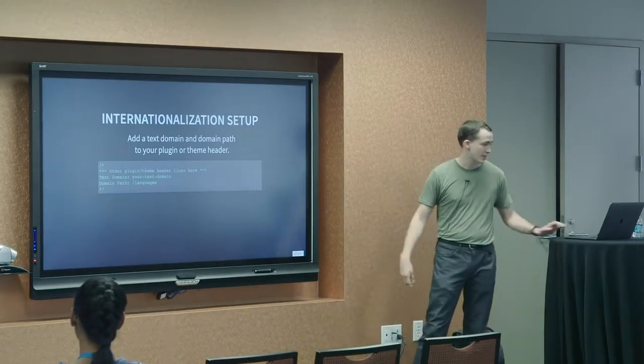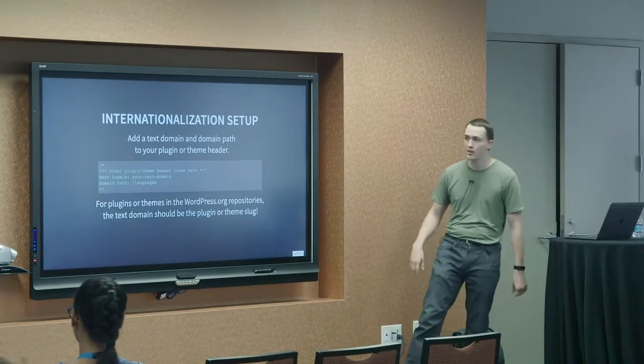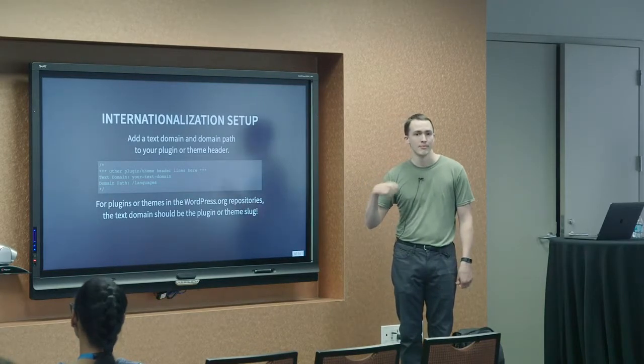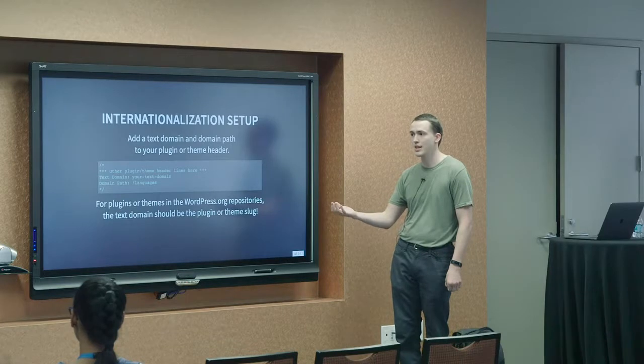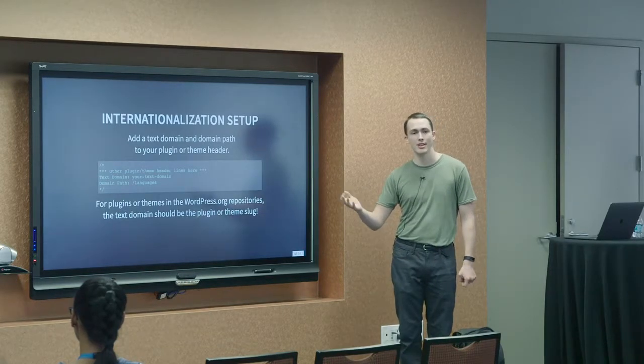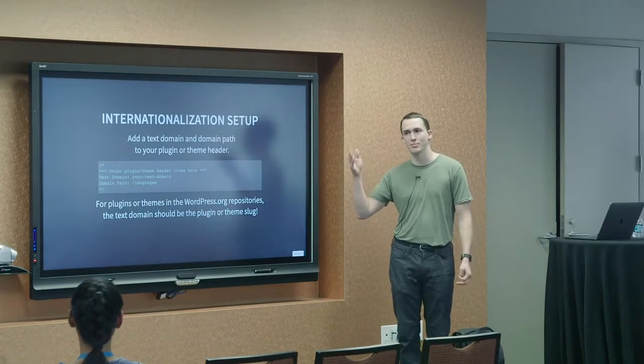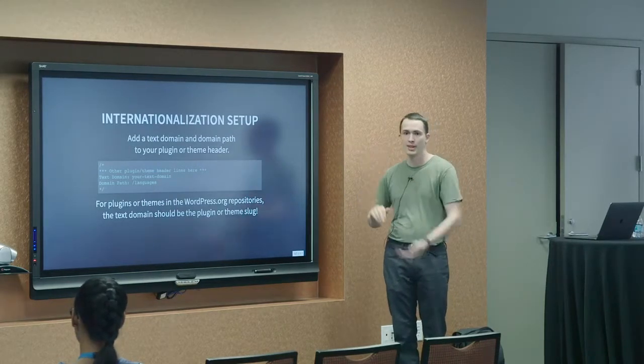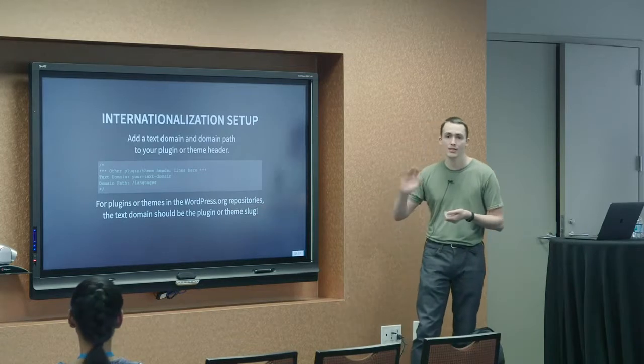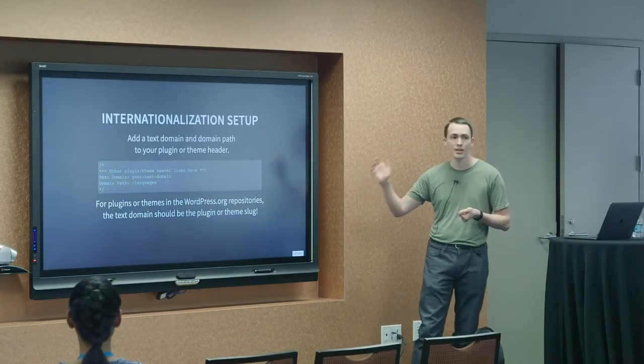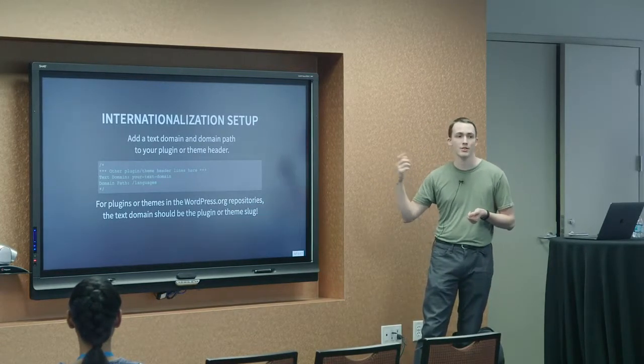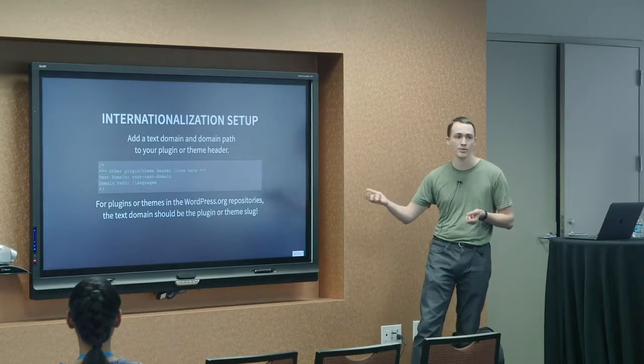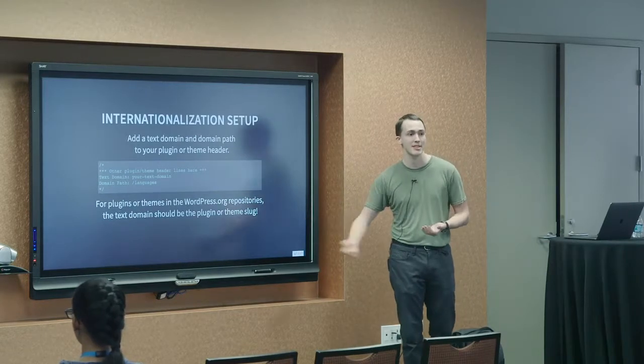And in that particular case too, your text domain should match the slug of your plugin or theme. So if your plugin name is myawesomeplugin and you can view it on wordpress.org/plugins/myawesomeplugin, myawesomeplugin would be your text domain. If you do not do that on things released on wordpress.org, it does make the automatic translation through translate.wordpress.org a little bit more difficult to be done automatically behind the scenes.